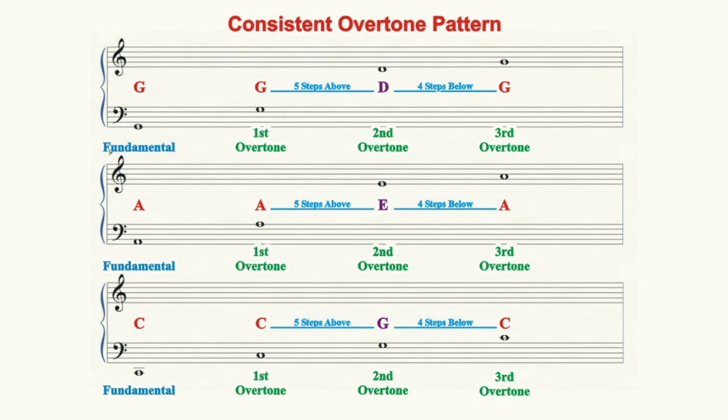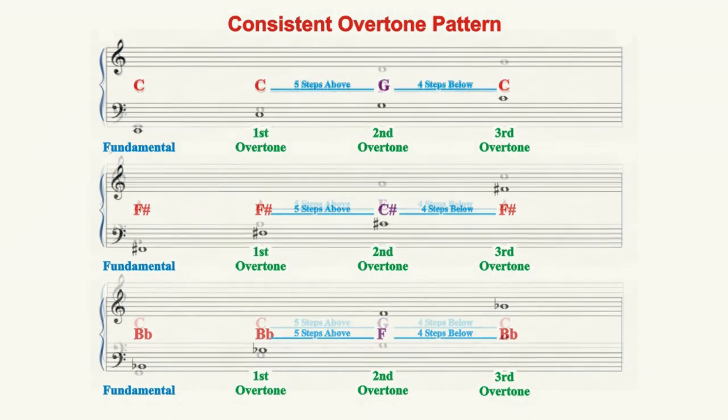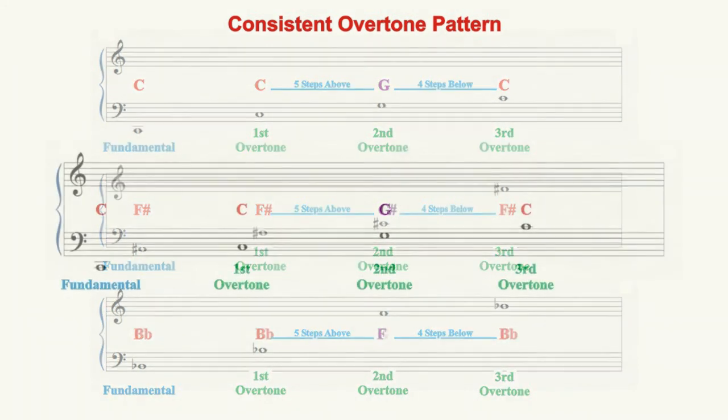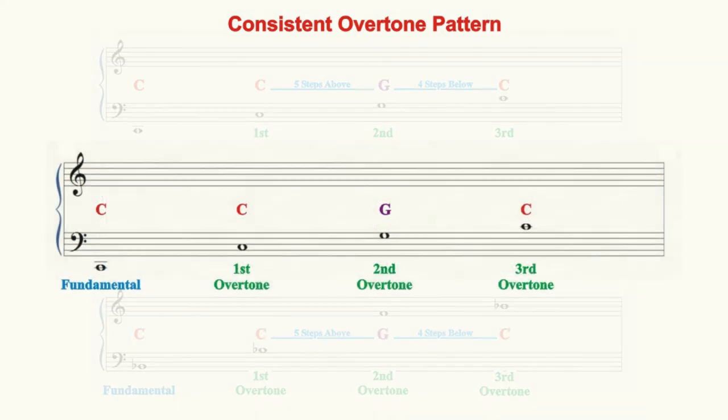To demonstrate, let's listen to our Beethoven reduction again and we'll perform it using the three different fundamentals of C, F sharp, and B flat to make the point that tonal relationships remain consistent regardless of the fundamental chosen. We already know that when C is the fundamental tone, the G is dominant.